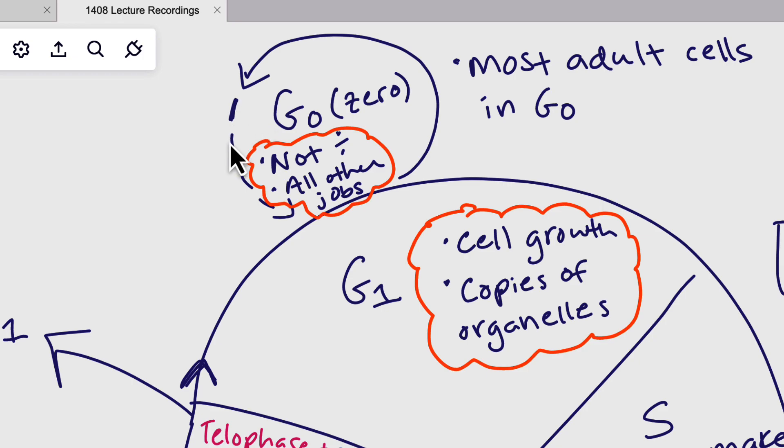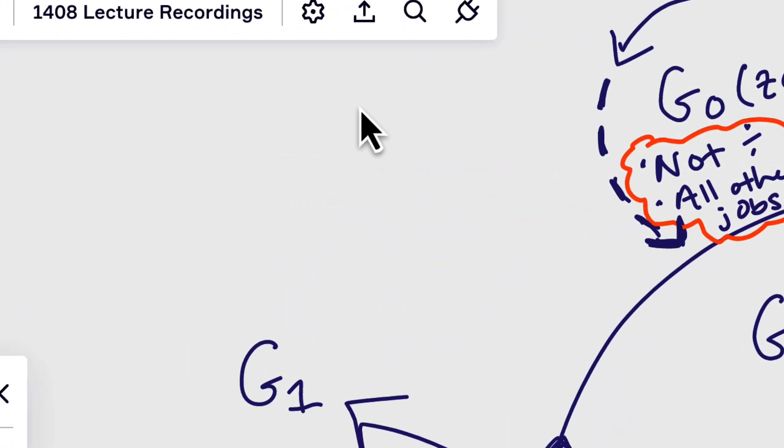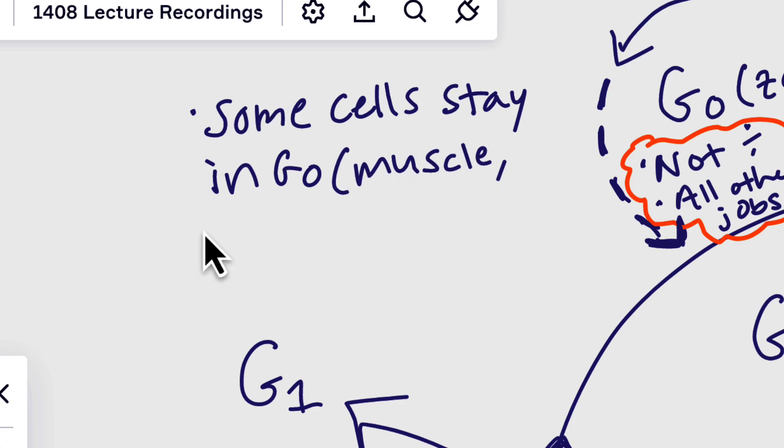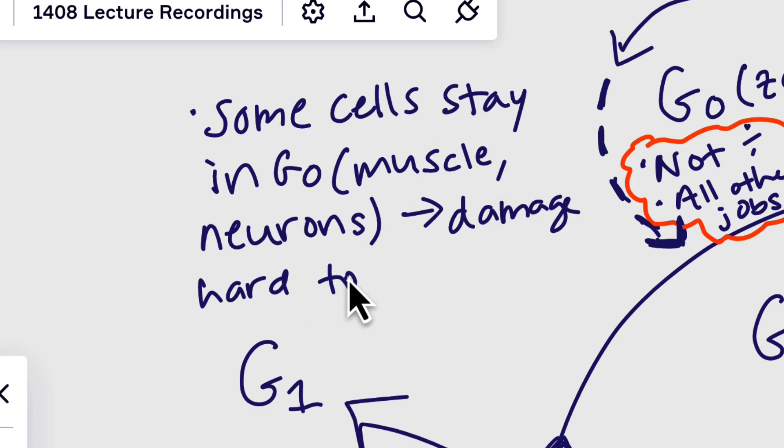Now, the reason that I have this dotted line here, instead of just a cycle line, is because some cells can be called back from G0, and some stay stuck there. So some cells stay in G0 forever. So particularly like in humans, muscle cells, neurons, and this actually is a consequence: it makes damage hard to repair.